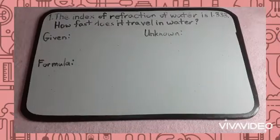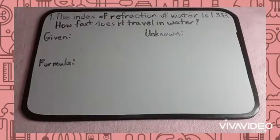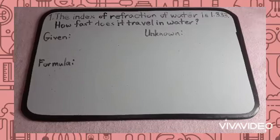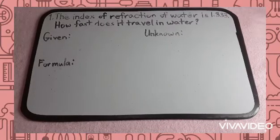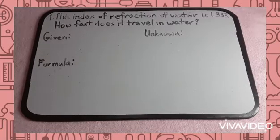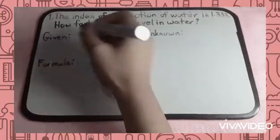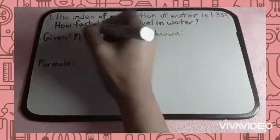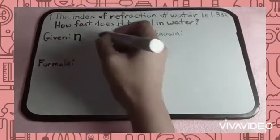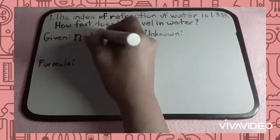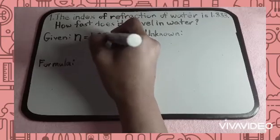Sample problem number 1. The index of refraction of water is 1.333. How fast does it travel in water? First, let's identify the given. The index of refraction of water, which symbolizes small letter N, is equivalent to 1.333.